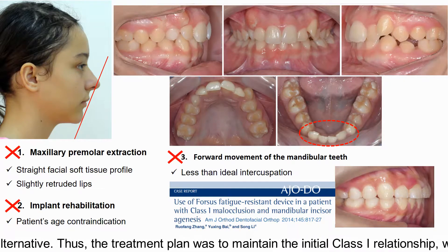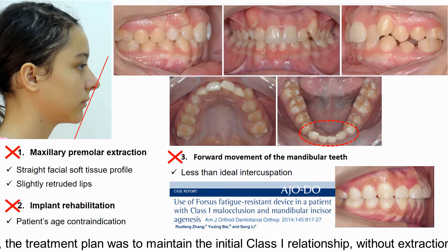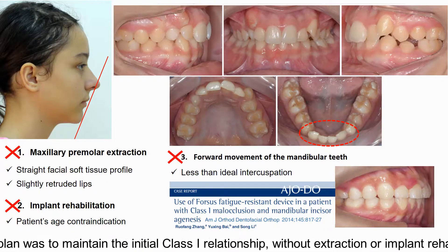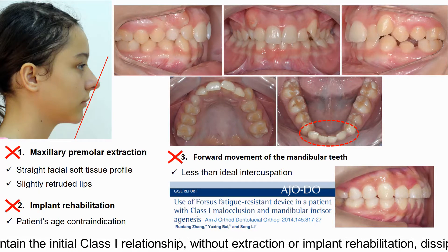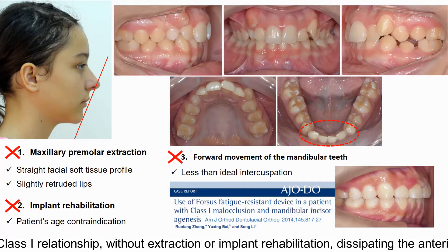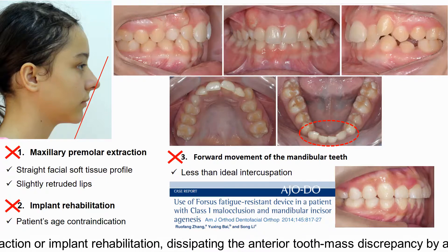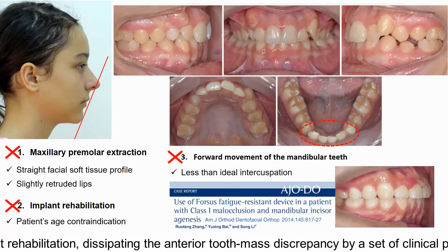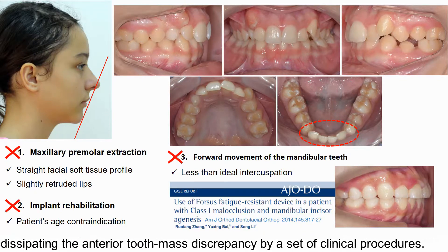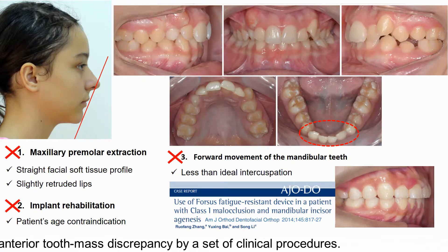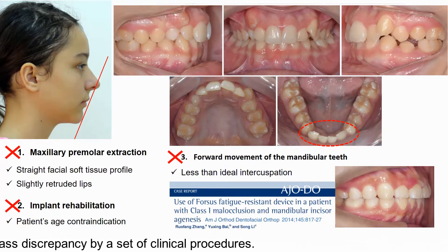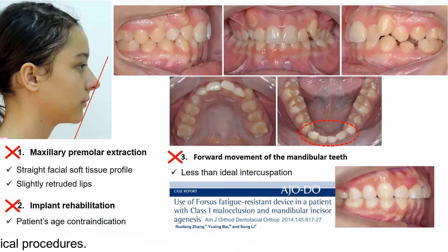Thus, the treatment plan was to maintain the initial Class I relationship without extraction or implant rehabilitation, dissipating the anterior tooth mass discrepancies by a set of clinical procedures.